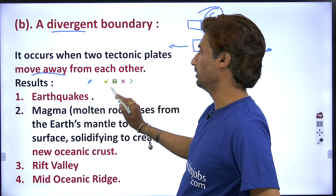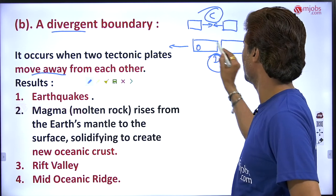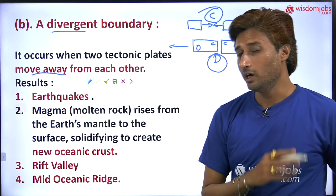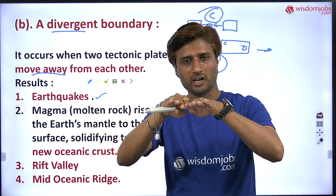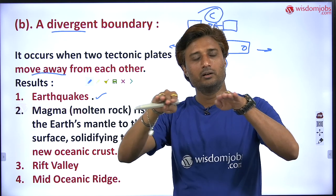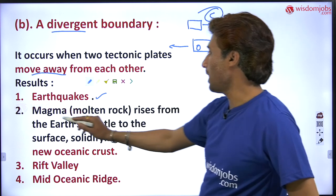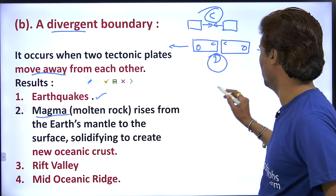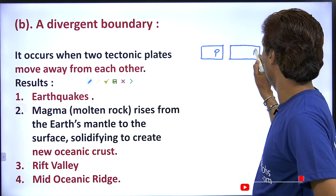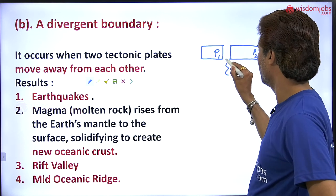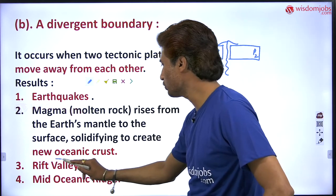It moves away from each other, which results in: number one, earthquake — because in earthquake, cracks are developed. How are cracks developed? Because at that point it is diverging in two different directions. Then magma of molten rock rises from the earth's mantle to the surface, solidifying to create new oceanic crust.